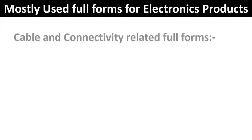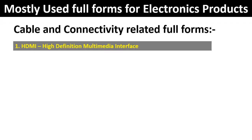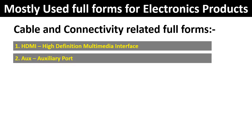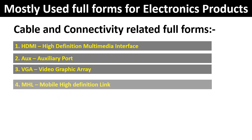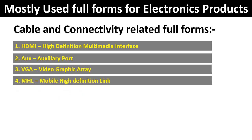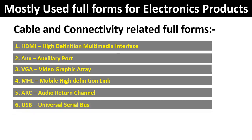Cable and Connectivity Related Full Forms. 1. HDMI — High Definition Multimedia Interface. 2. AUX — Auxiliary Port. 3. VGA — Video Graphics Array. 4. MHL — Mobile High Definition Link. 5. ARC — Audio Return Channel.